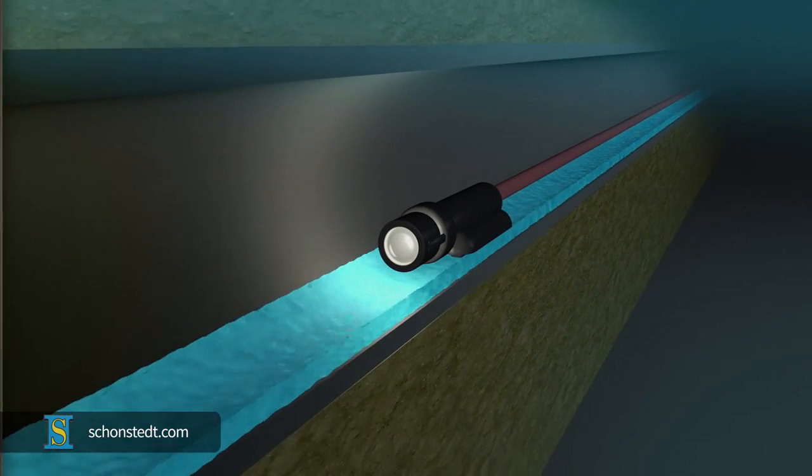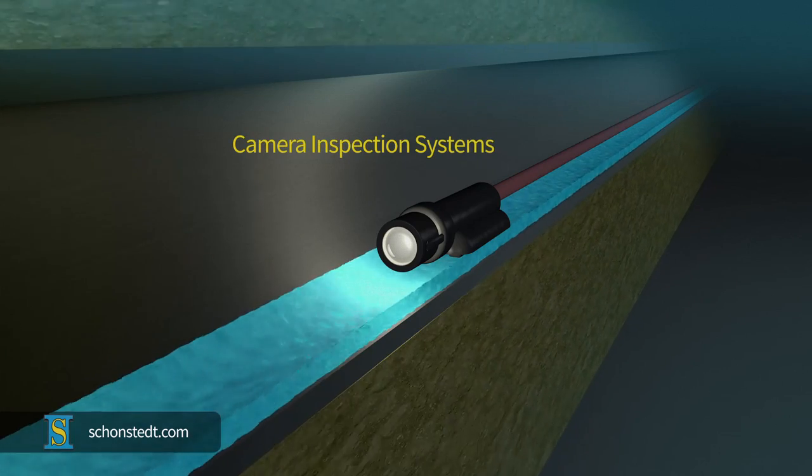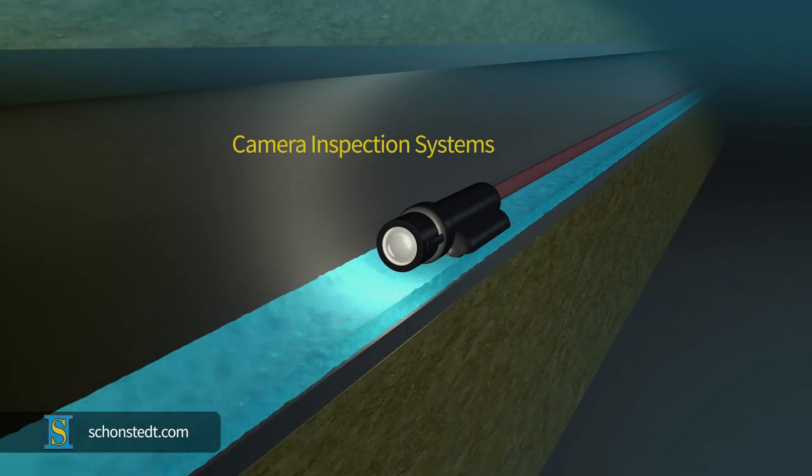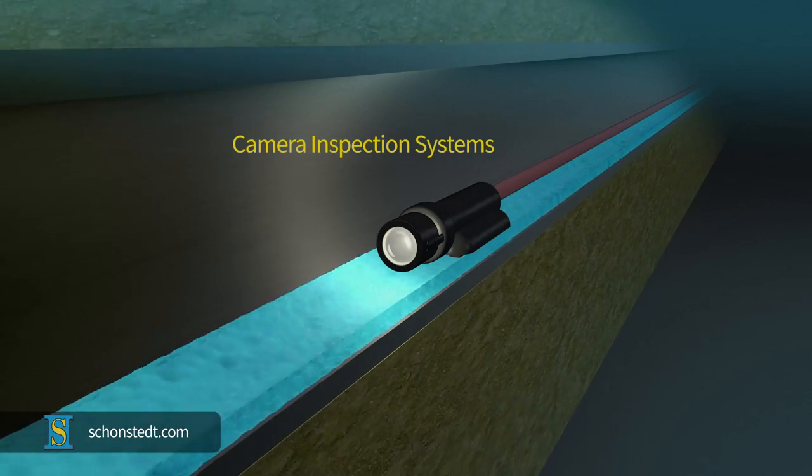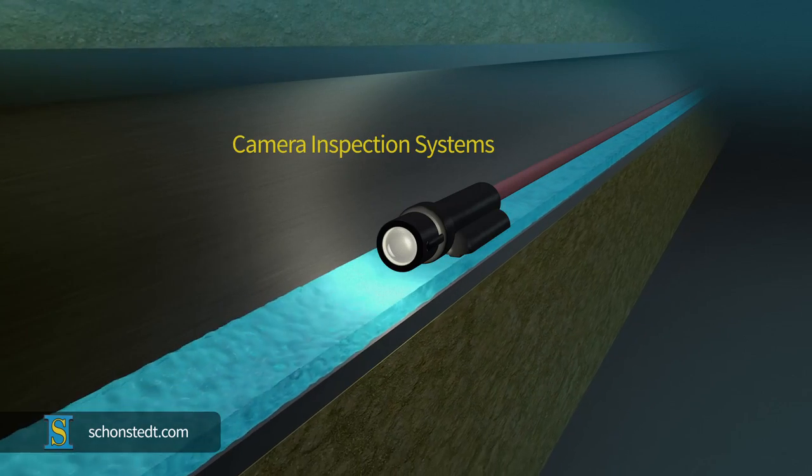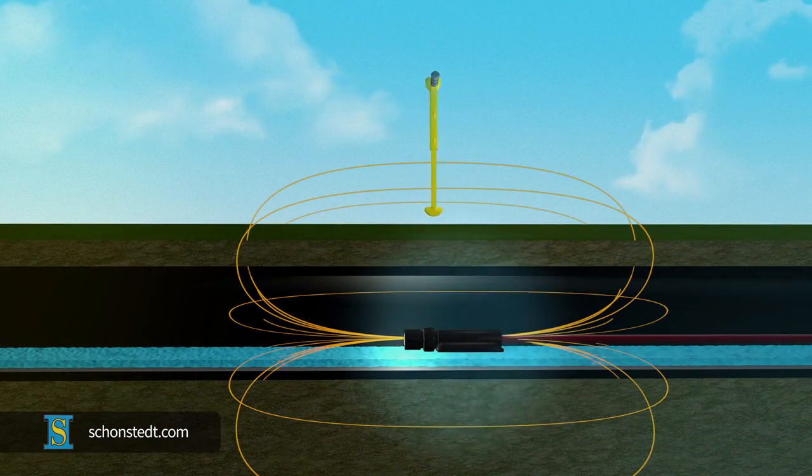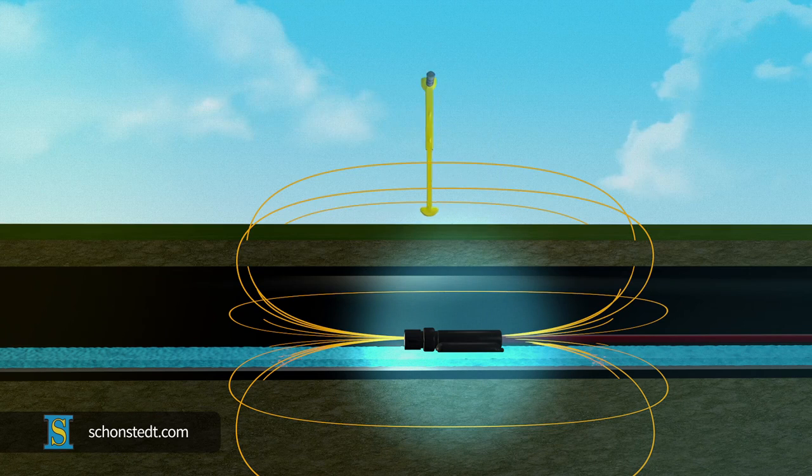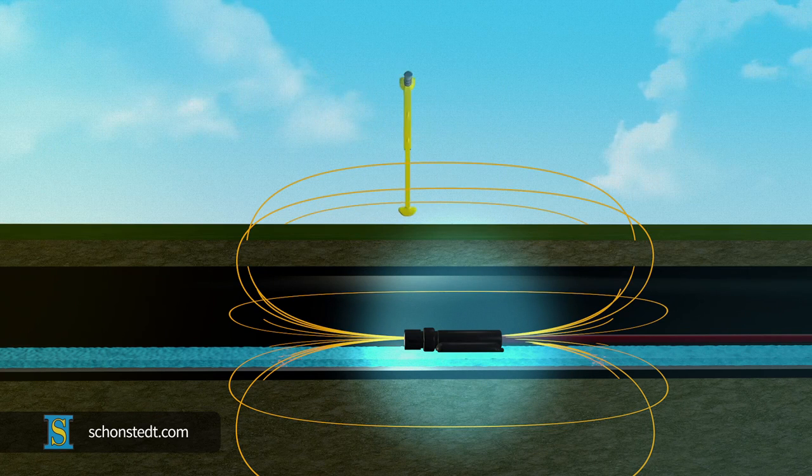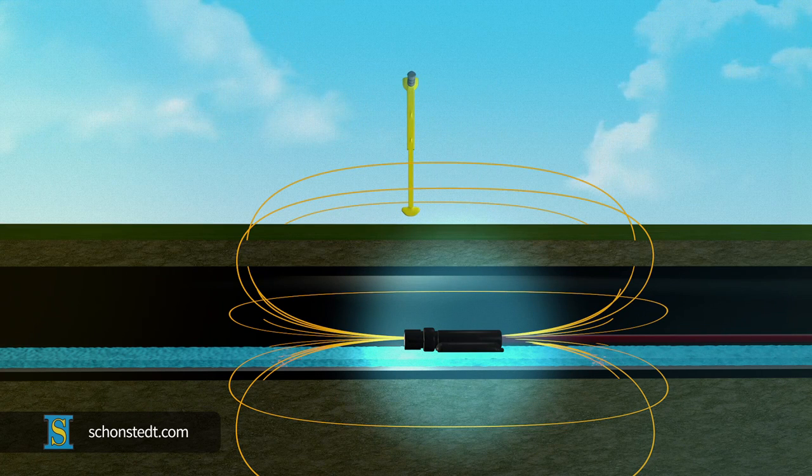Sondes are often built into camera inspection systems for sewer pipes, water pipes and other underground structures. Therefore, these inspection cameras can also be located with the same technique and the same instruments used to locate a sonde, as long as the frequency admitted by the cameras is the same frequency at which the receiver is operating.